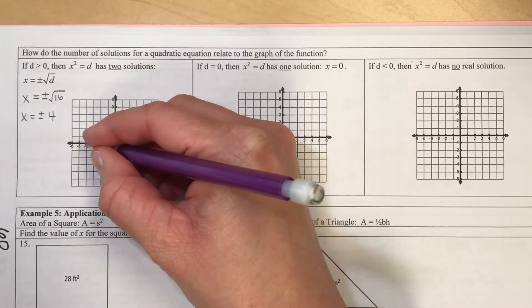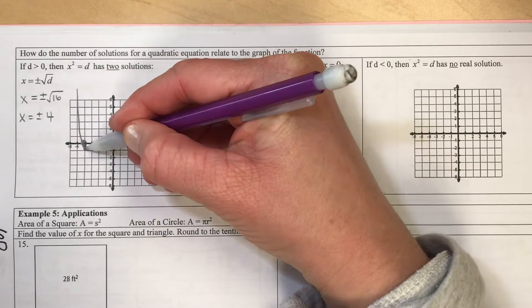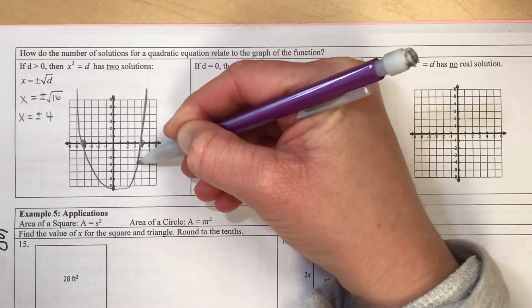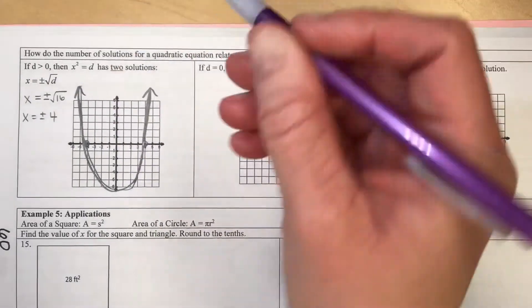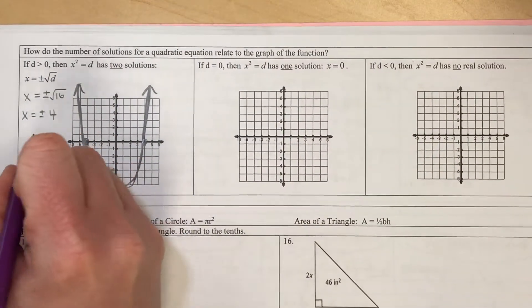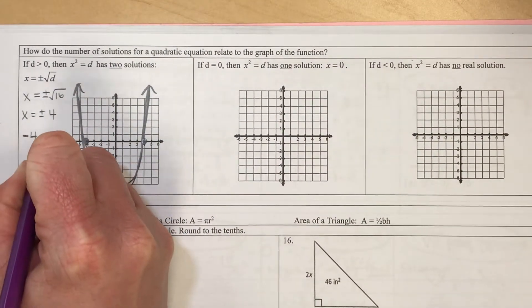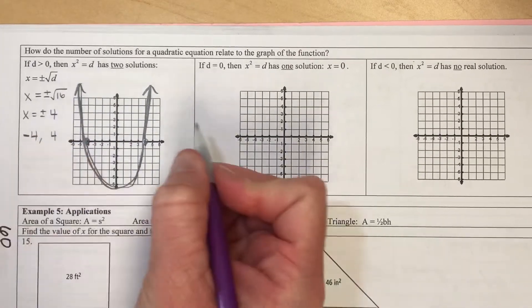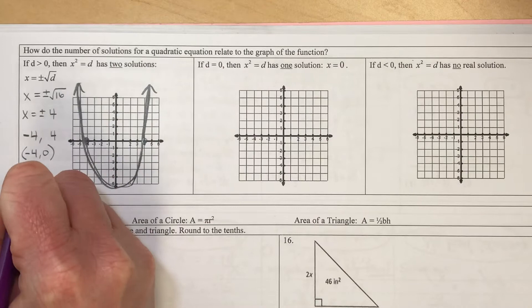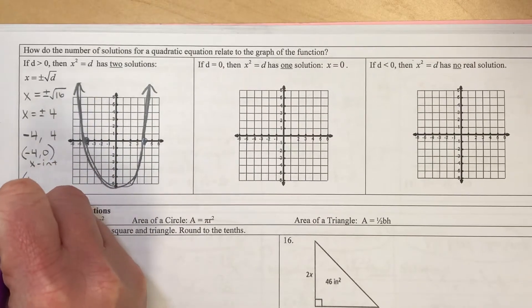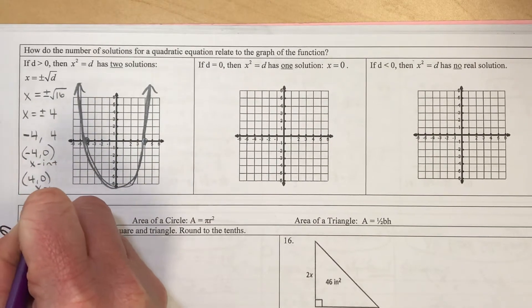So what it's going to look like on your graph is something like this. You're going to have your quadratic cross through your x-axis at two places, once at the negative location and once at the positive location. So you have two intercepts. Negative 4, 0 is one x-intercept, and then 4, 0 is another x-intercept.